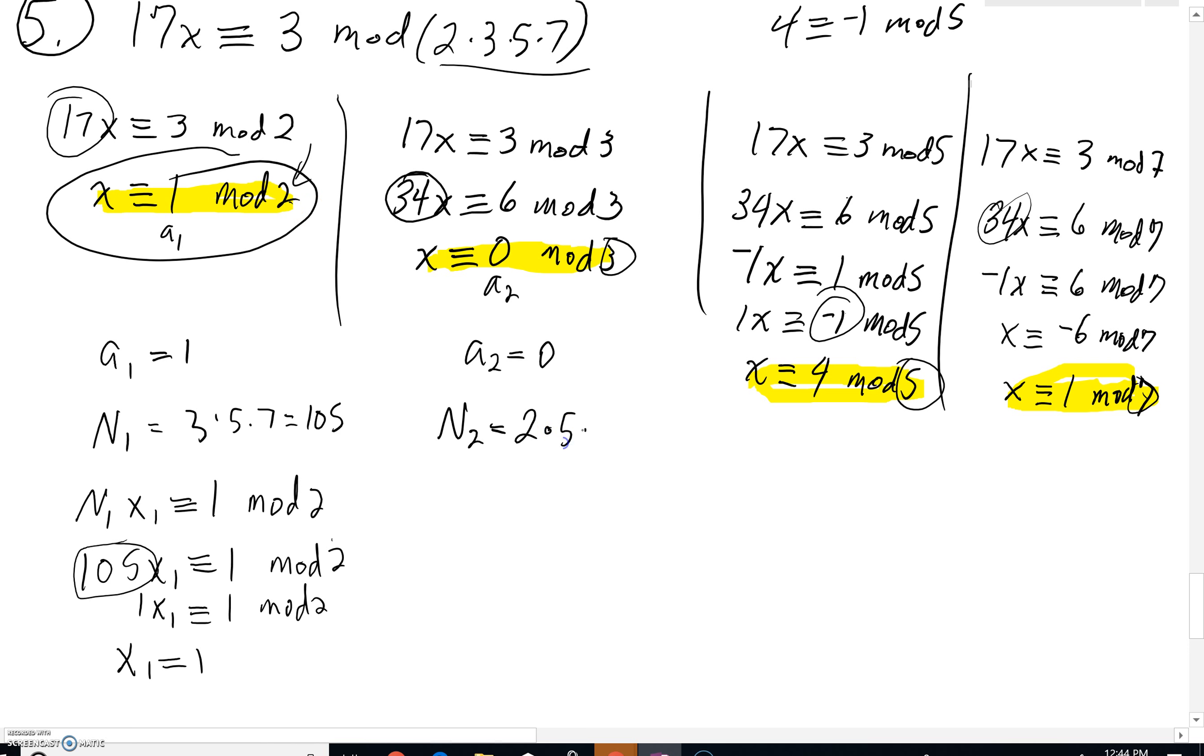So you've got a mod of 2, a mod of 5, and for this third equation a mod of 7. So 10 times 7, you'd get 70. So n sub 2 is 70.